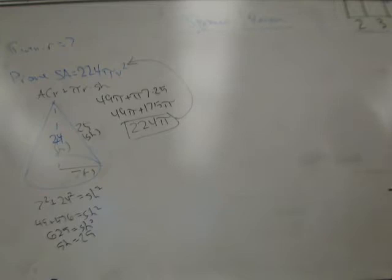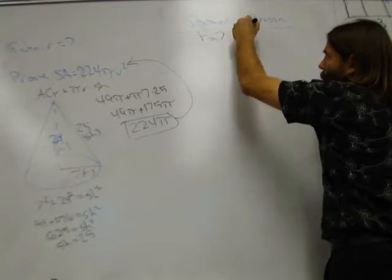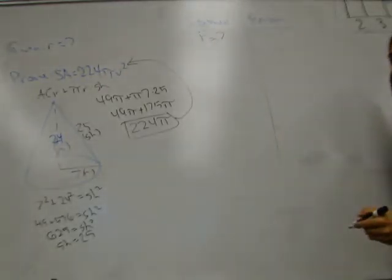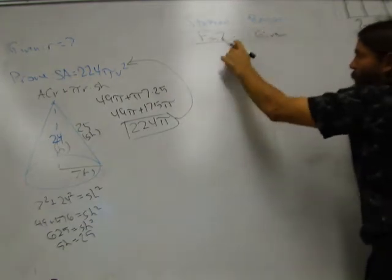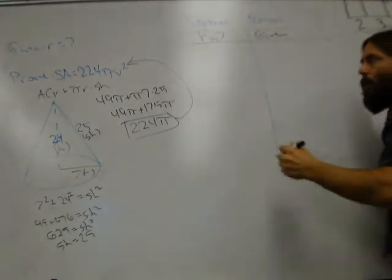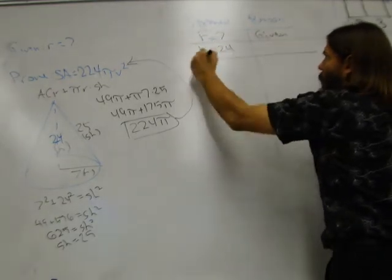What was our first given? Radius equals 7. Would it be okay to say that the height equals 24 is your first given? Yeah. It's not relevant which order you get those in. We need them both. So our second statement is going to be what? Height equals 24. Okay. And that's also given.